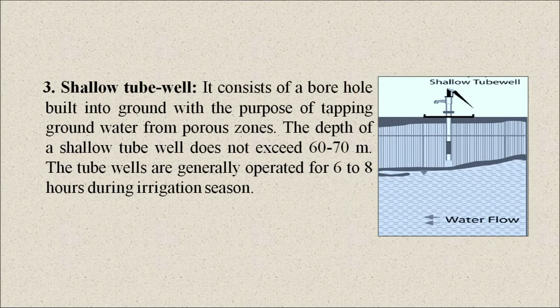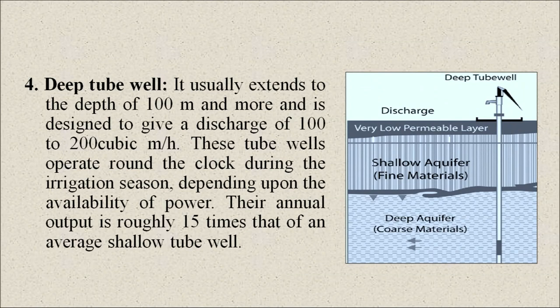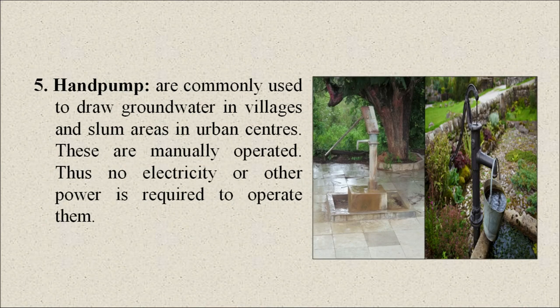Next is the shallow well, which consists of a borehole built into the ground to tap groundwater from porous zones. The depth of a shallow tube well does not exceed 60 to 70 meters, and these wells are generally operated for 6 to 8 hours during irrigation season. Next is the deep tube well, which usually extends to a depth of 100 meters or more and is designed to give a discharge of 100 to 200 cubic meters per hour. These operate round the clock during irrigation season, and their annual output is roughly 15 times that of an average shallow tube well. Next is the hand pump, commonly used to draw groundwater in villages and slum areas in urban centers; these are manually operated and require no electricity.